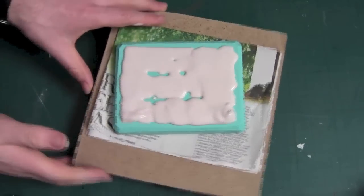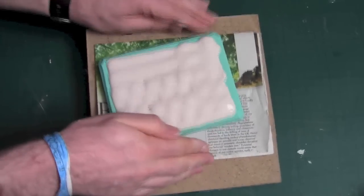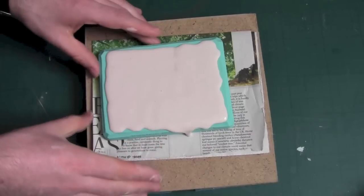By banging on the board, you ensure that the plaster goes into all the detail of the mold while pushing out any air bubbles to the surface.